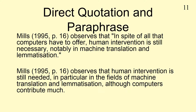When you use somebody else's words and ideas, but not exactly as they are written, this is known as indirect quotation or paraphrase. For example, Mills (1995, p.16) observes that human intervention is still needed, in particular in the fields of machine translation and lemmatisation, although computers contribute much.